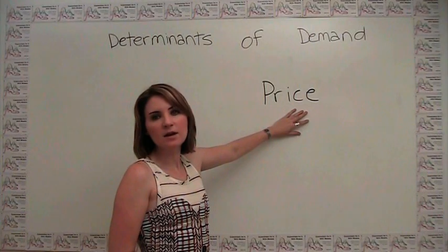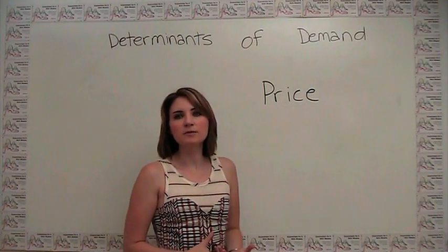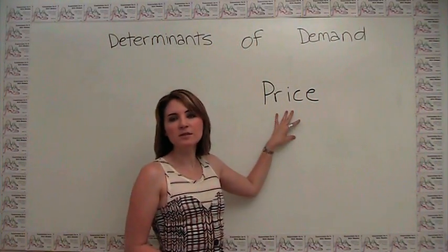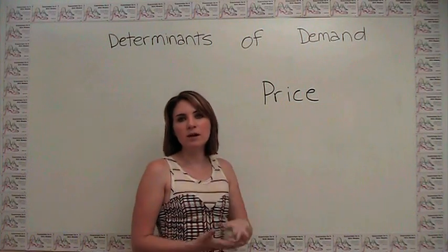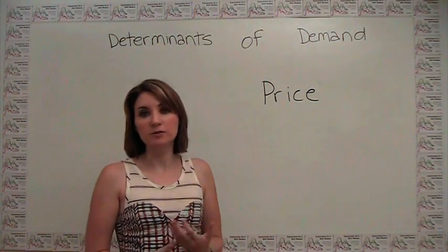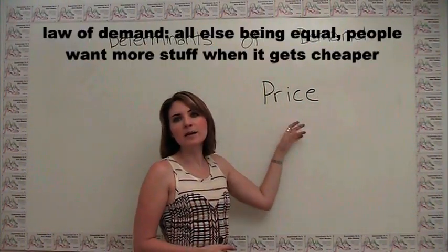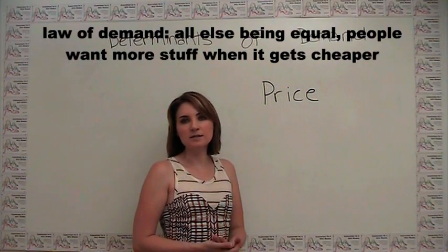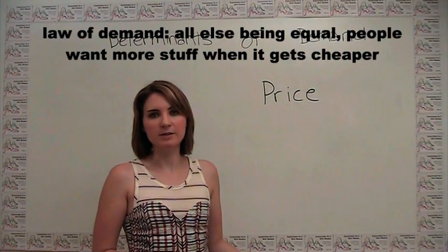We already talked about price as a determinant of demand when discussing the demand curve. Price is probably the most fundamental determinant of the quantity demanded of an item, which is why we represent that determinant on our demand curve directly. The law of demand states that as the price of a good decreases, all else being equal, consumers demand more of that item and vice versa.